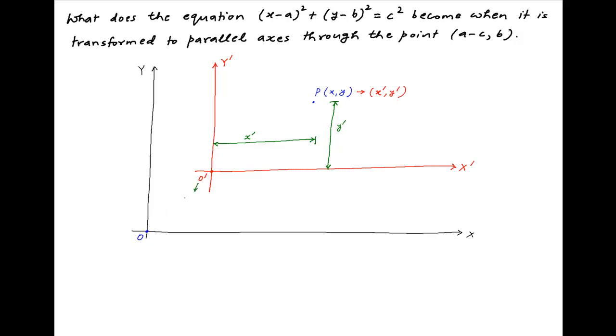We are also given that the coordinates of the point O' with respect to the old axes are A-C and B. Therefore, the horizontal distance of the point O' from OY is A-C, and the vertical distance of the point O' from OX is B.